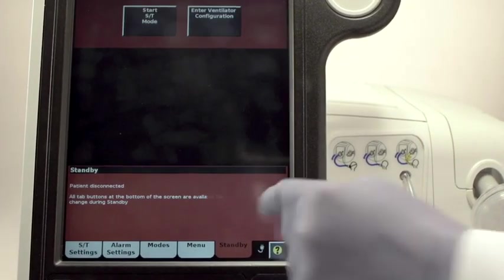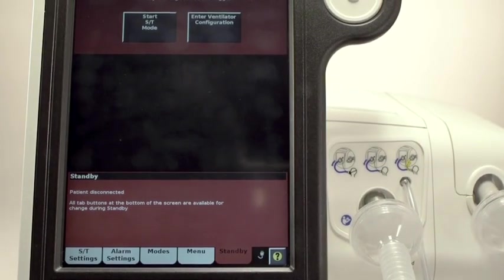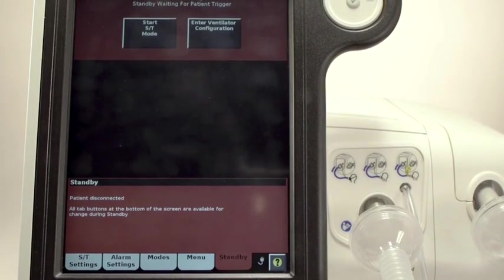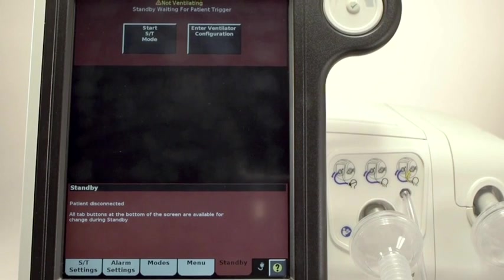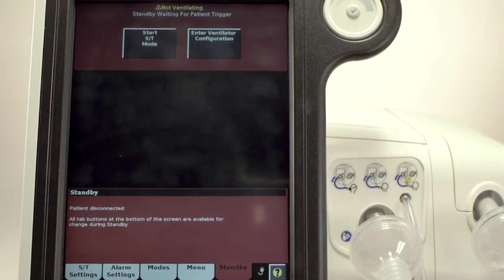For this demonstration, let's say we are transitioning this patient from non-invasive to invasive ventilation, and we want to do it as fast as possible. We will touch Standby, disconnect the patient, and then touch Enter Ventilator Configuration.